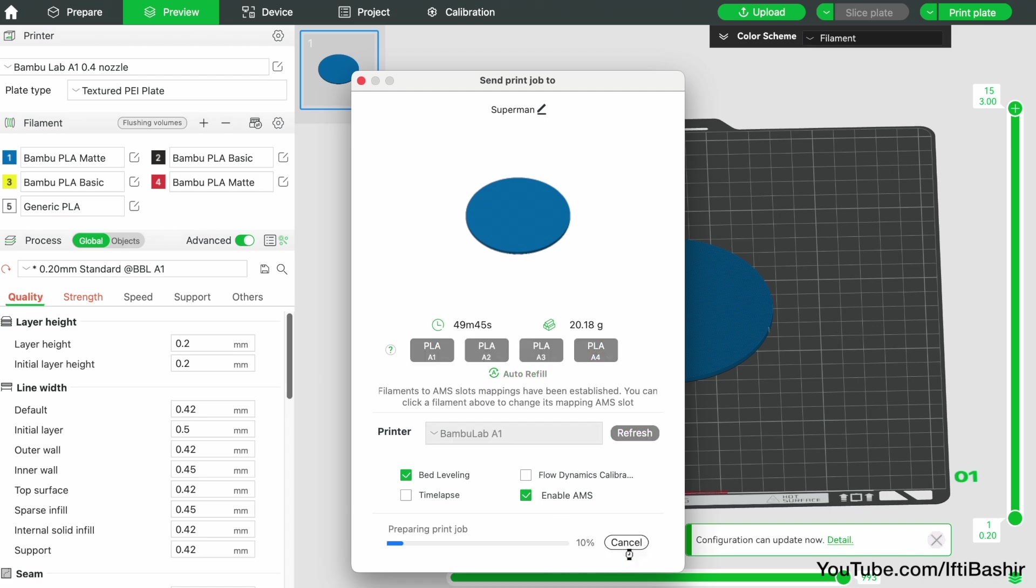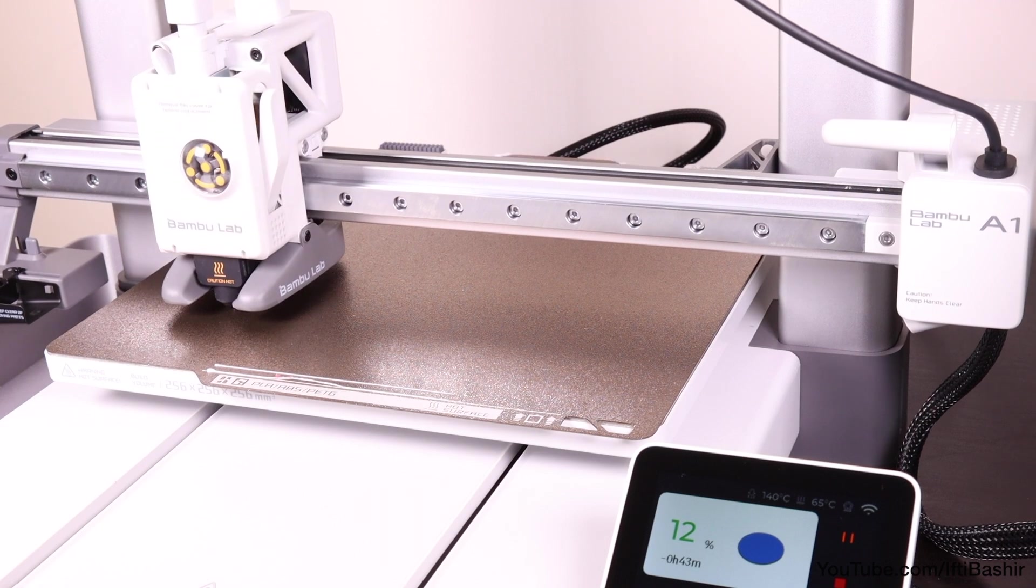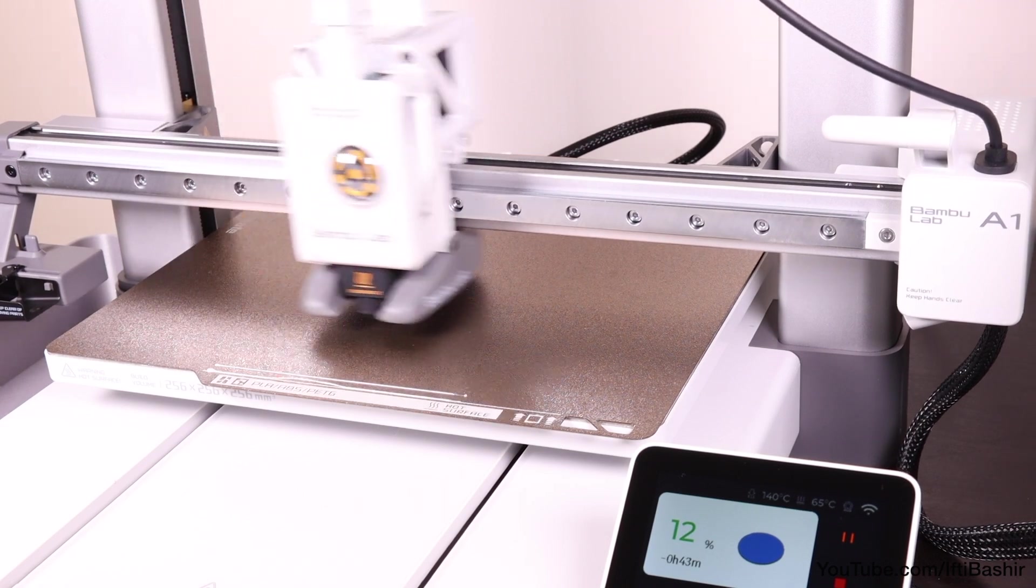The system will go through its normal calibration routine again as well as bed levelling if the options have been chosen and then start printing.